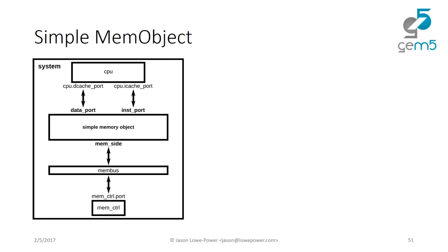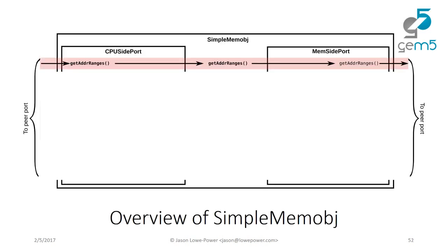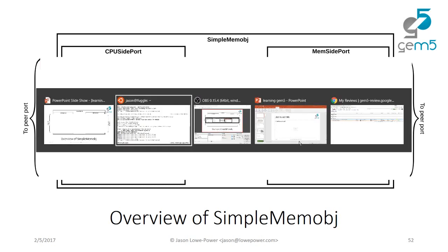With that, let's create a simple memory object. We're going to take our Hello object and turn it into a simple memory object. We'll have a CPU, a membus, and a memory controller, and stick our memory object right in between the membus and the CPU so we can see how to implement this interface. We'll slowly go through the slides as we implement the whole API.